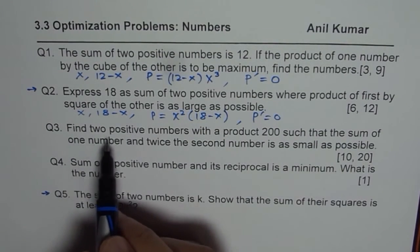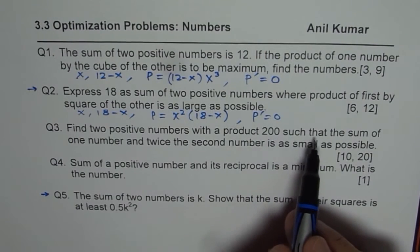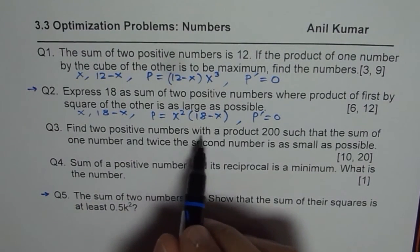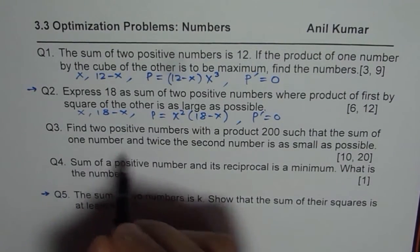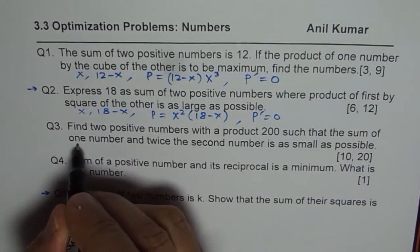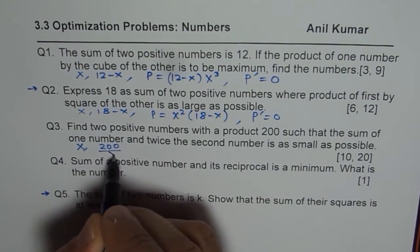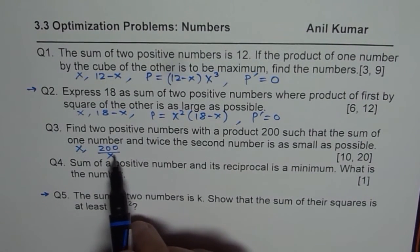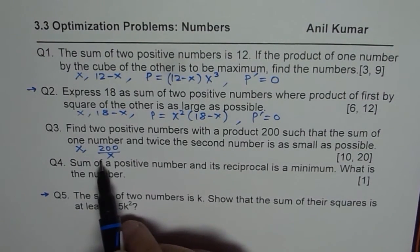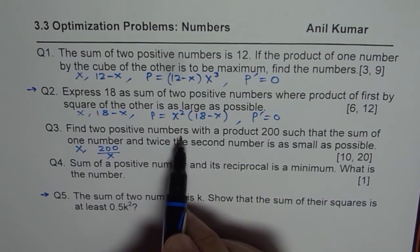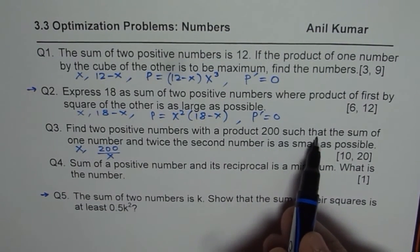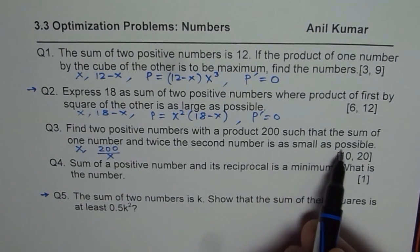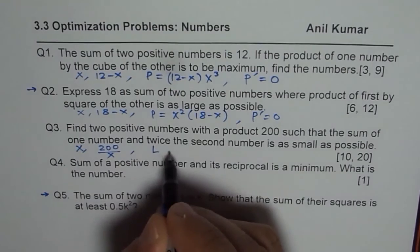Question 3: find two positive numbers with a product of 200 such that the sum of one number and twice the second number is as small as possible. The two numbers satisfy x · y = 200, so if one number is x, the other is 200/x. When you multiply them, their product is 200. We are looking for the least sum, so let's call it L.